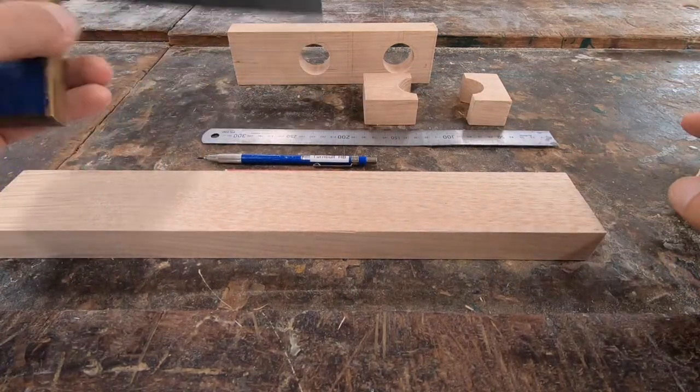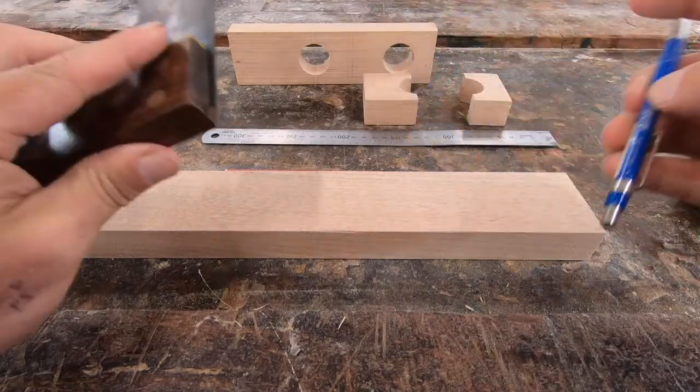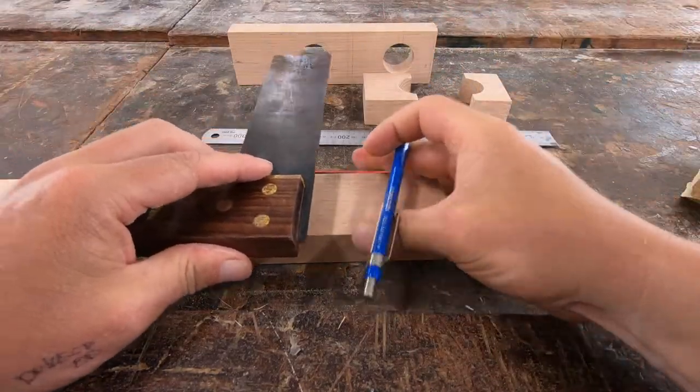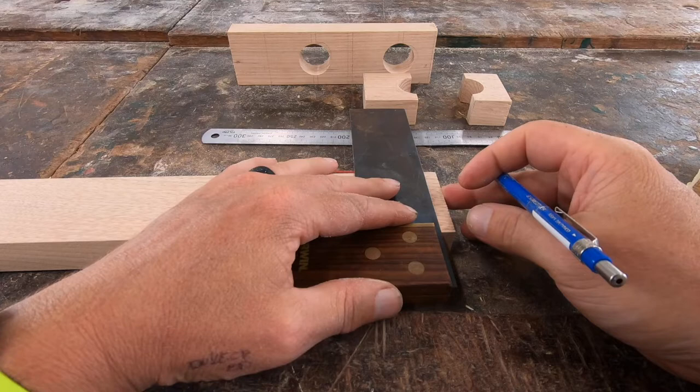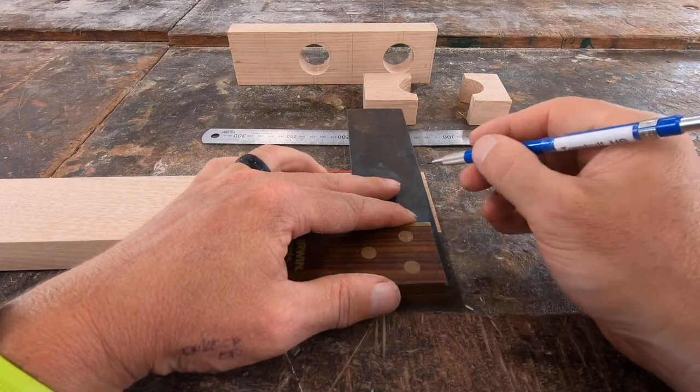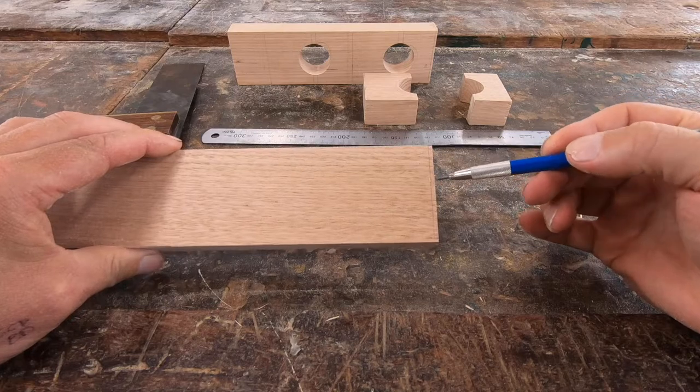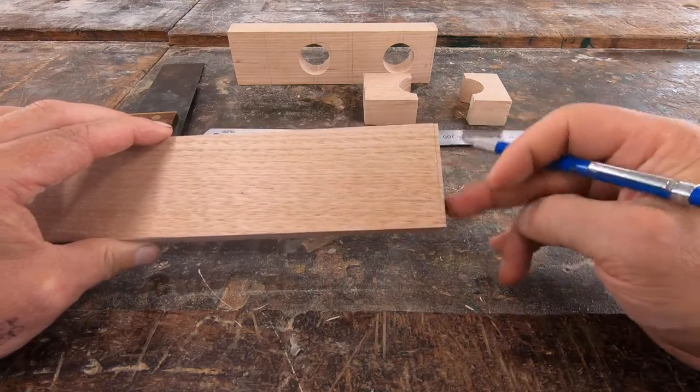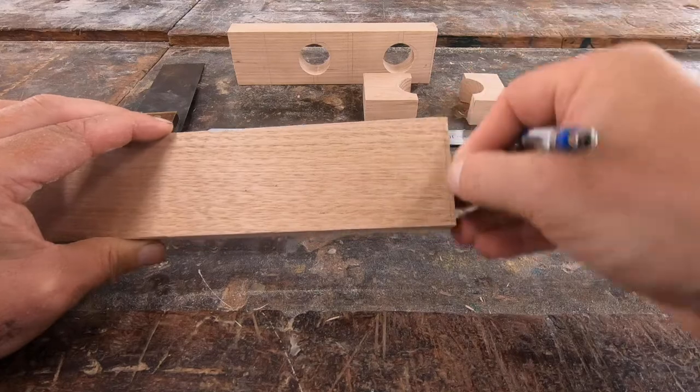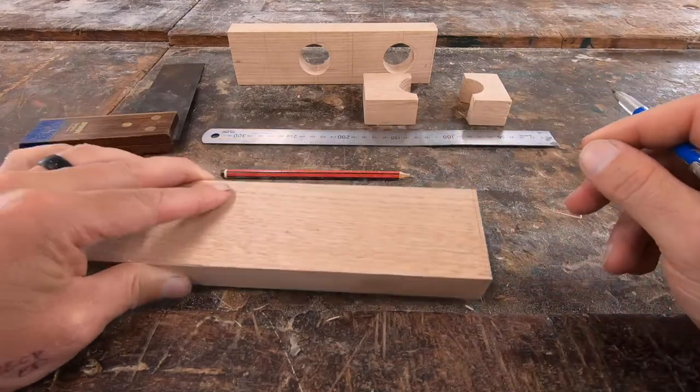So the first thing I need to do is get my tri-square, my nice sharp pencil, and I'm going to line this up and put a line very close to the end over here so that I can know that that is a square line, because I'm not sure if this has been cut properly or whatever the case may be. That's a nice even line to start from.